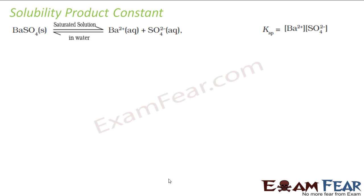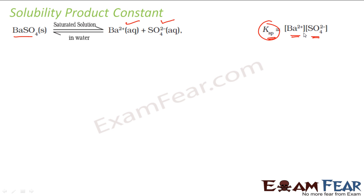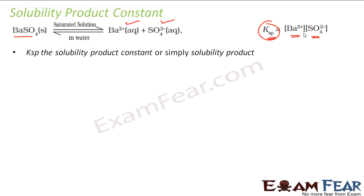For example, BaSO₄ in a saturated solution dissociates into Ba²⁺ and SO₄²⁻. When put in water it gives barium ions and sulfate ions. Ksp is nothing but the concentration of Ba²⁺ multiplied by the concentration of SO₄²⁻ — the solid is ignored. So Ksp equals concentration of Ba²⁺ times concentration of SO₄²⁻.